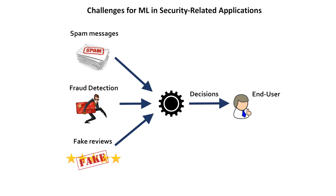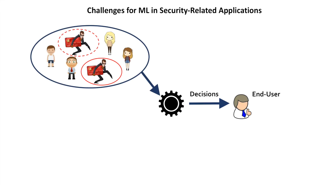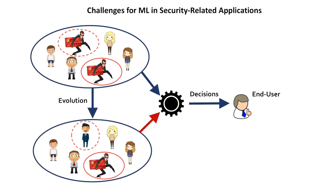Machine learning models are increasingly deployed in security-related applications such as spam detection, fraud detection, and fake reviews detection. Different from traditional classification scenarios where data distributions are usually stationary, in security-related applications, malicious entities may consistently evolve to evade being detected by machine learning models.